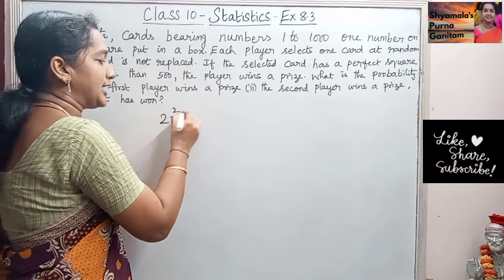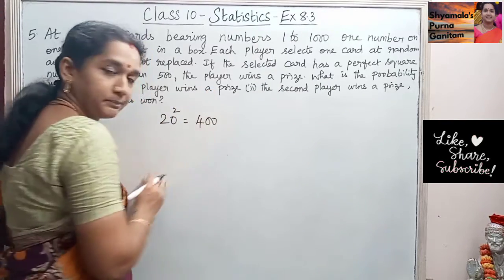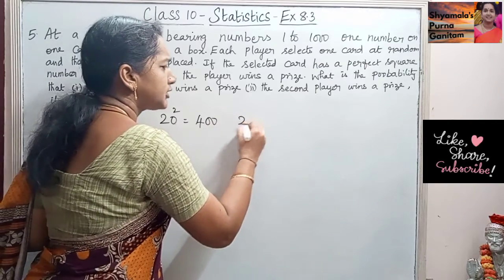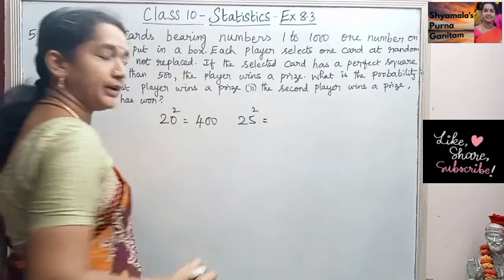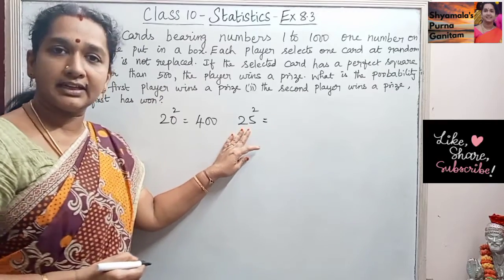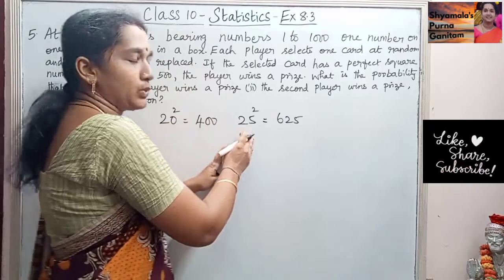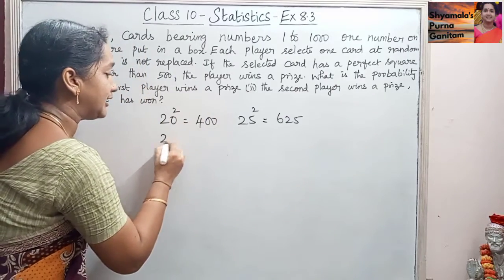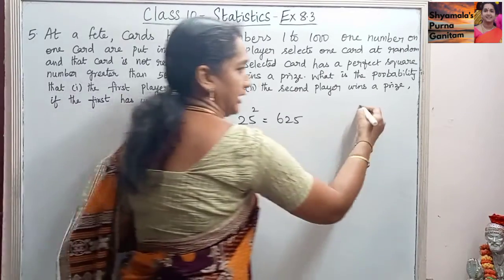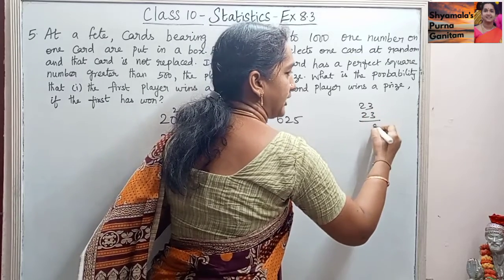So if we take 20 squared, it is 400, which is less than 500 only. Then 25 squared, if we take 25 squared, that is 625. So between 20 and 25 only we are having this. So we take 23 and check, 23 squared.